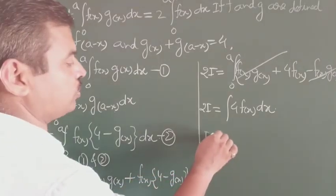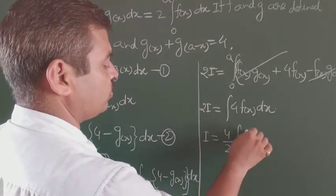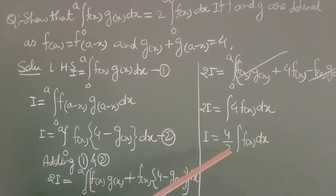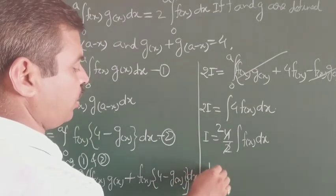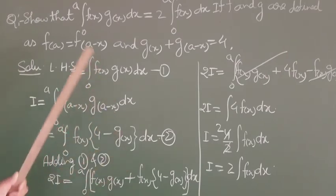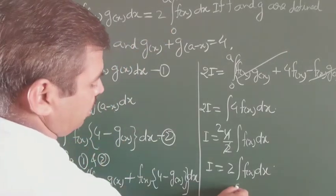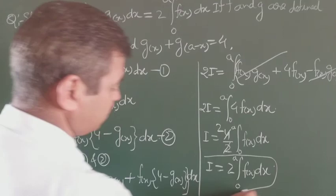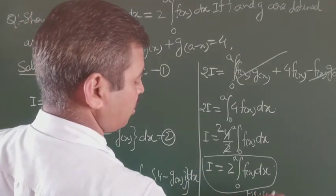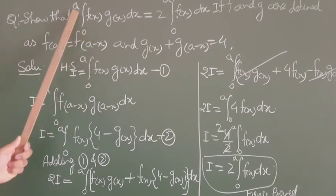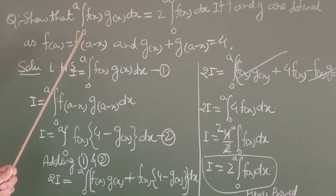Therefore I = (4/2) ∫₀ᵃ f(x) dx, which gives I = 2∫₀ᵃ f(x) dx. We have proved the required result. The limits remain 0 to a. This proof is also based on the property ∫₀ᵃ f(x)dx = ∫₀ᵃ f(a - x)dx.